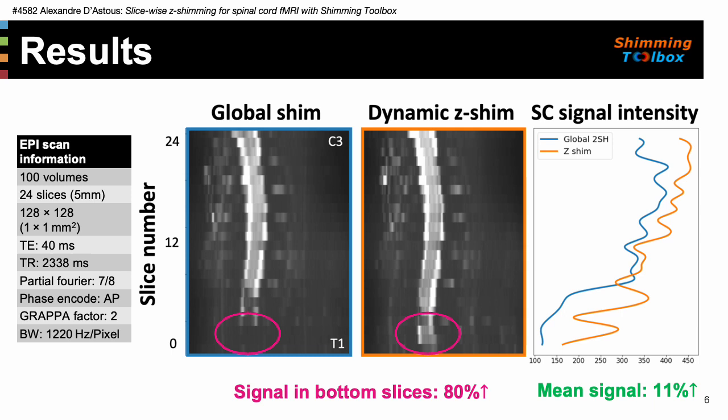To test our results, we acquired two sets of EPI images: one shimmed using the scanner's second-order global shim, and one using the dynamic z-shimming procedure calculated by shimming toolbox. The acquisitions were performed on a Prisma 3T scanner. We acquired 100 volumes of 24 slices with 5 mm slice thickness. The figure shows a sagittal view of the mean of the 100 EPI volumes and a graph showing the signal intensity of both acquisitions. We observed an 11% increase in signal intensity across all voxels in the region of interest.